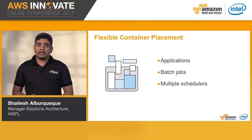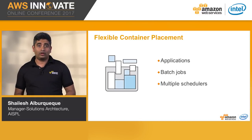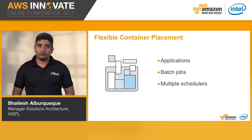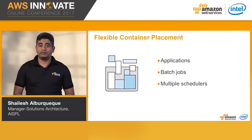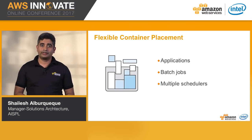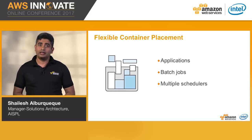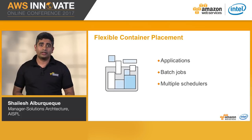Amazon ECS has two built-in schedulers: one for long-running applications and services such as user-facing web applications, and another for short-running tasks like batch jobs. Because ECS provides a powerful set of APIs, it allows you to integrate your own custom schedulers as well as open-source schedulers, giving you very flexible methods to do scheduling on ECS.